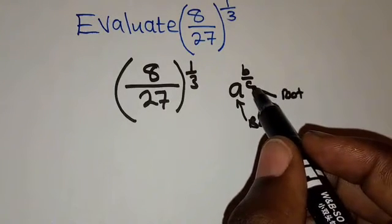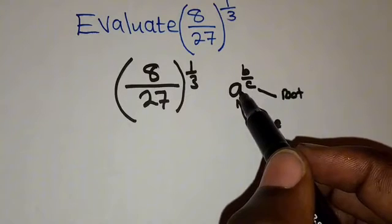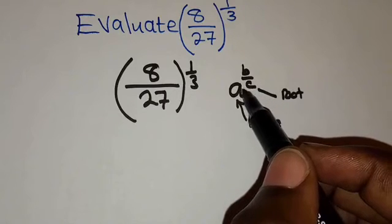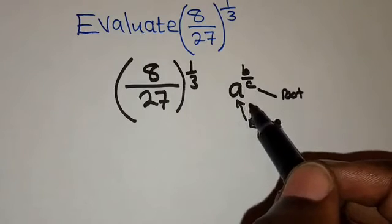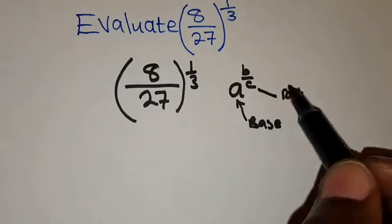So if this number C is a 2, it means they want you to find the square root of the base A. If this number C is 3, it means they want you to find the cube root of the base A. If C is 4, it means they want you to find the fourth root.